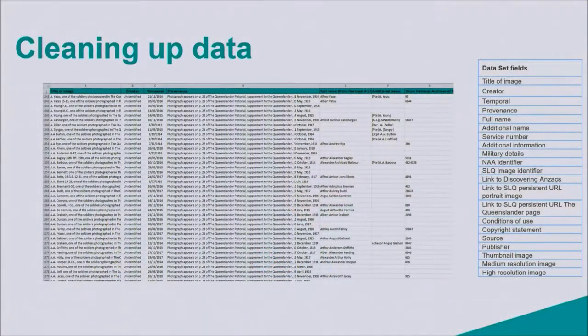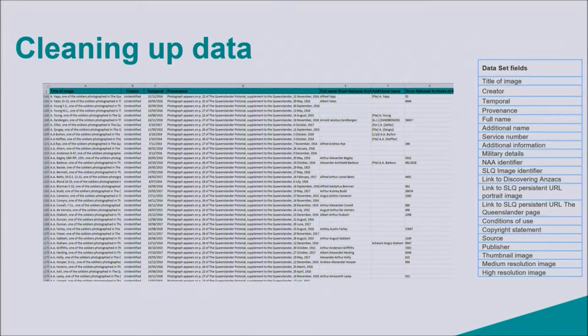We organised the data into fields, as you can see on the table on the right-hand side here: information about the portrait, the soldier, dates, source links, identifiers, conditions of use, copyright, publisher and the resolution of the images. This was following the standards and guidelines provided by the government portals. We organise the data once and then many people can benefit from it, and supplying our data to the portals provides transparency but also allows people to experiment with it and build it into interesting ways that people can discover our collections.